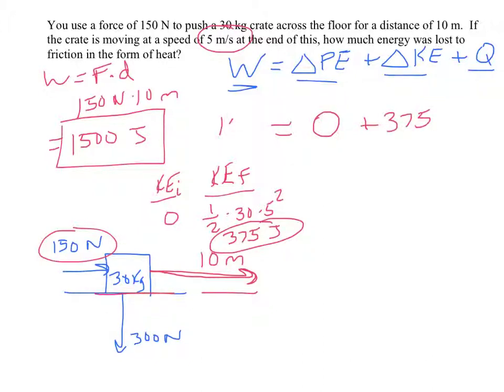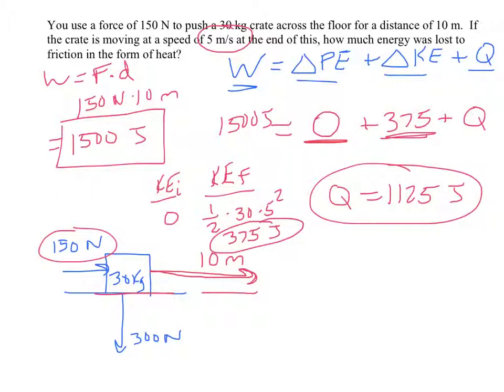So we said earlier there was 1,500 joules of work done. 375 of that went into the kinetic energy. None of it went into the potential. So the rest must have been wasted as heat. To calculate how much, we'll just subtract 375 from each side. And it turns out that 1,125 joules was wasted as heat.